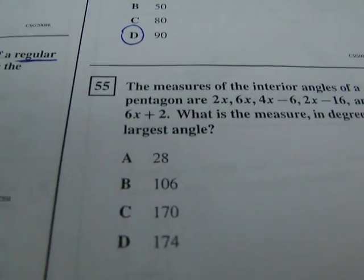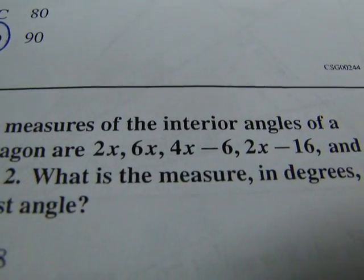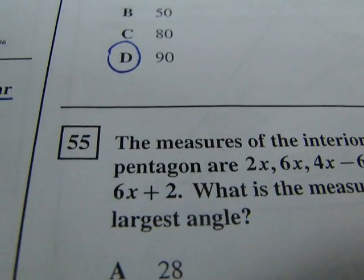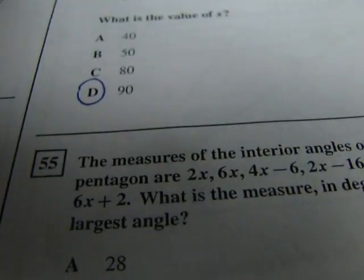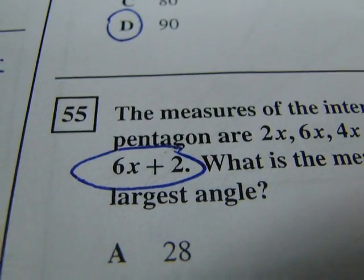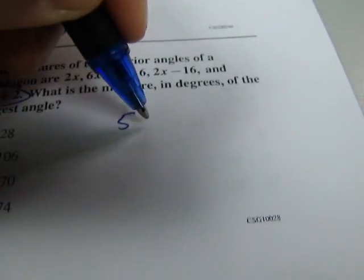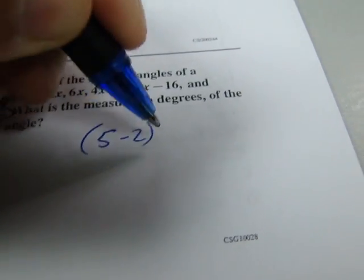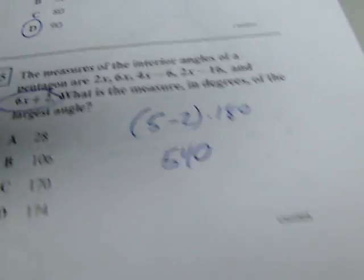Number 55. The measures of the interior angles of a pentagon are 2X, 6X, 4X minus 6, 2X minus 16, and 6X plus 2. What is the measure in degrees of the largest angle? Well, first of all, the largest angle has got to be 6X plus 2. That's just the biggest angle that we've got. So we know that it's a pentagon, so it has 5 sides. What you do is N minus 2 times 180. So 5 minus 2 is 3, and 3 times 180 is 540. So we know that all of these have to add up to 540.